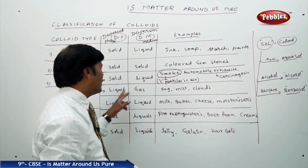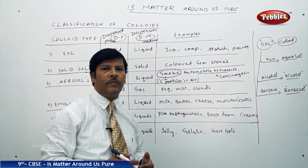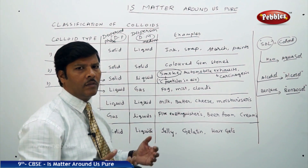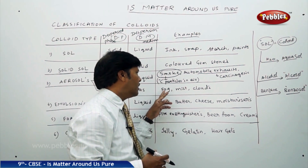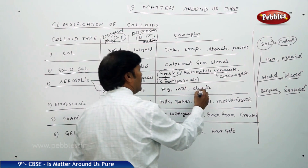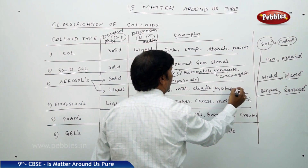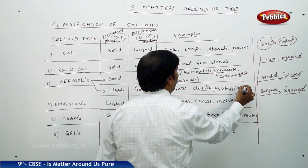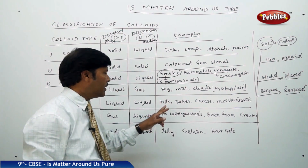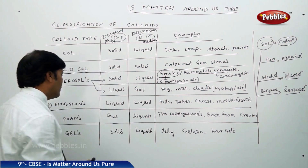Aerosols in the form of liquid in gas are quite common early in the morning — between 5:30 and 7:30 in colder weather, you find fog, mist, and clouds. Cloud is nothing but water vapour in air, which is basically humidity. Emulsions are liquid in liquid colloids — milk, butter, cheese, and moisturizers all come under emulsions.